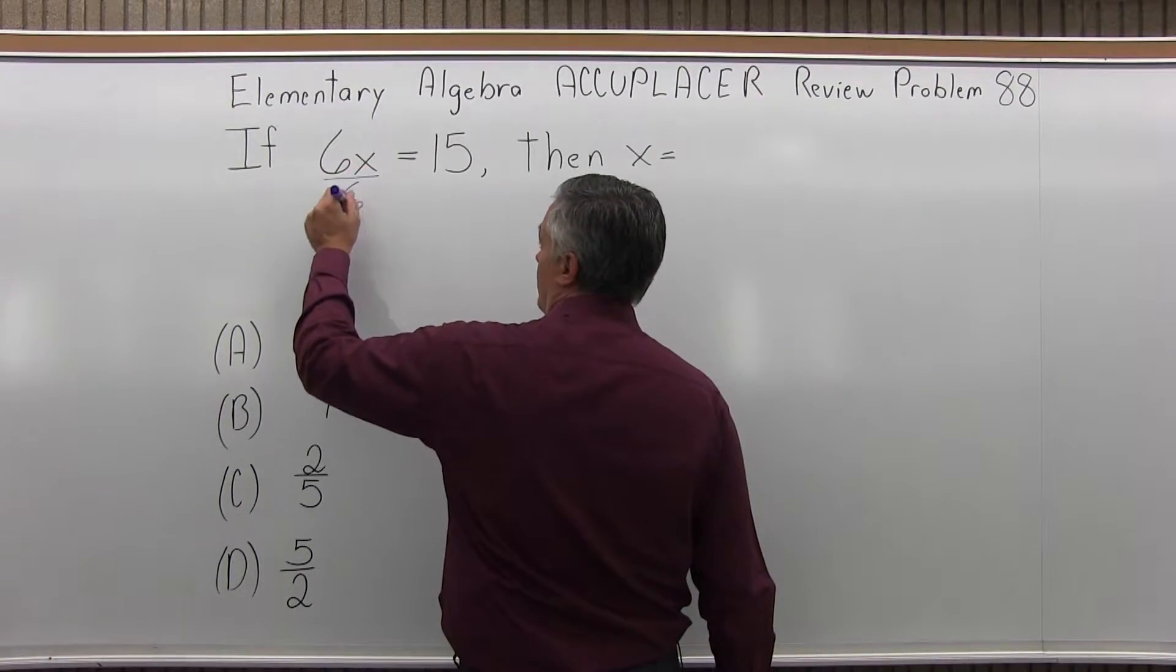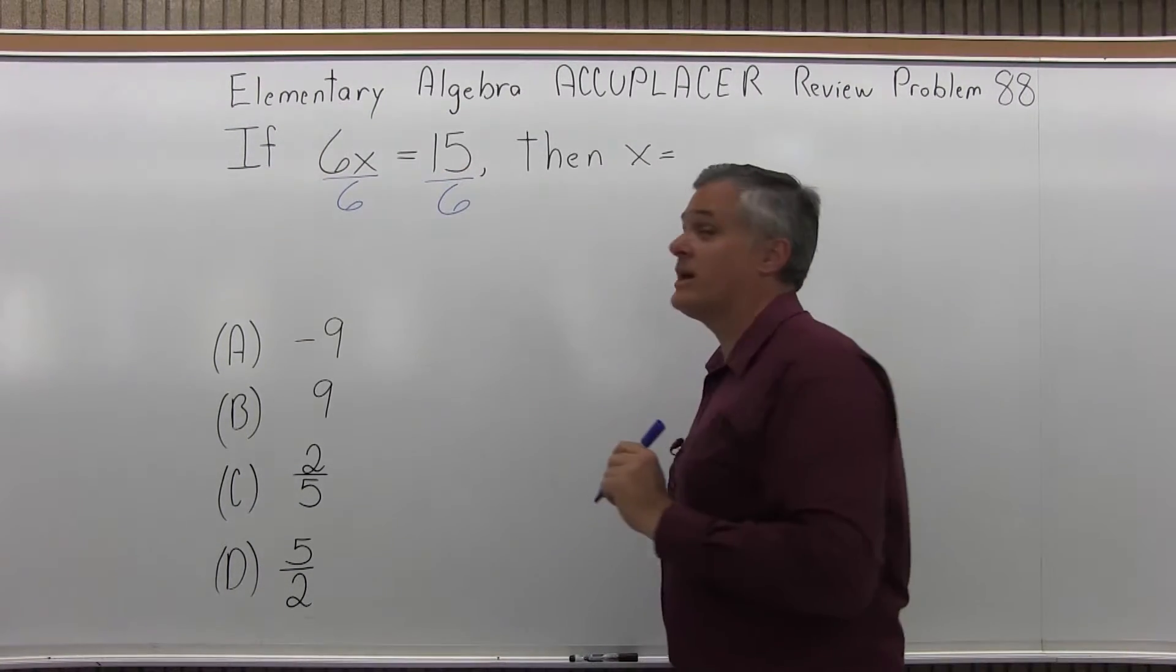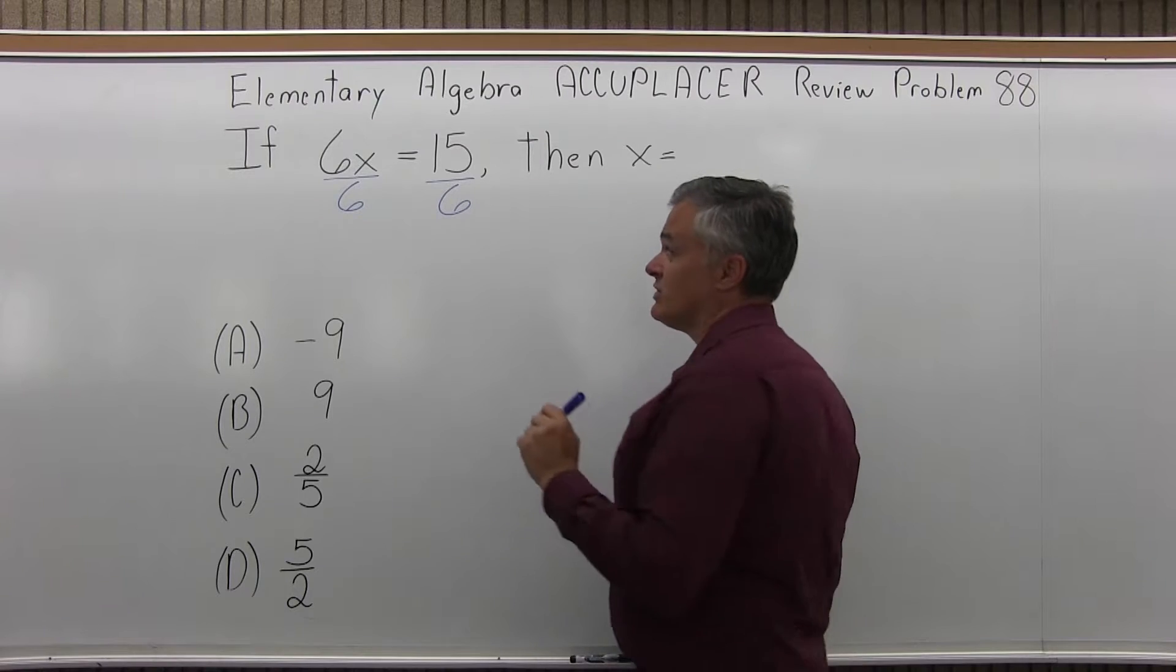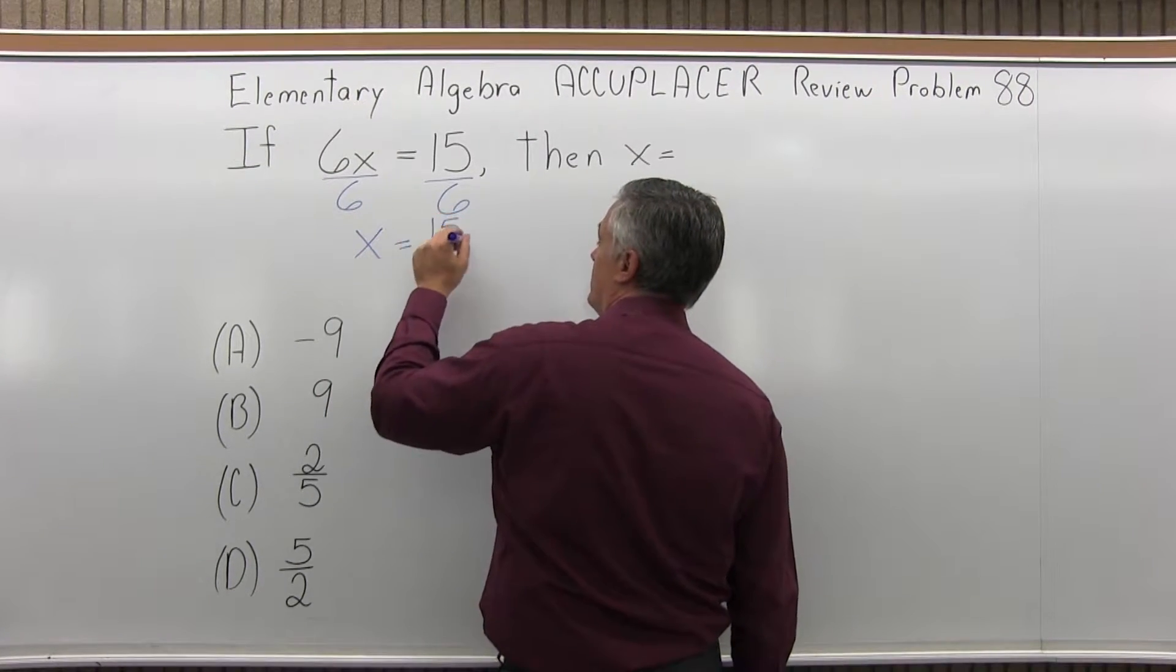On the left side, if I divide by 6, it will make the 6 go away, but if I do that I have to divide on the right also by 6. So 6x over 6, the 6's will cancel, giving me x equals 15 over 6.